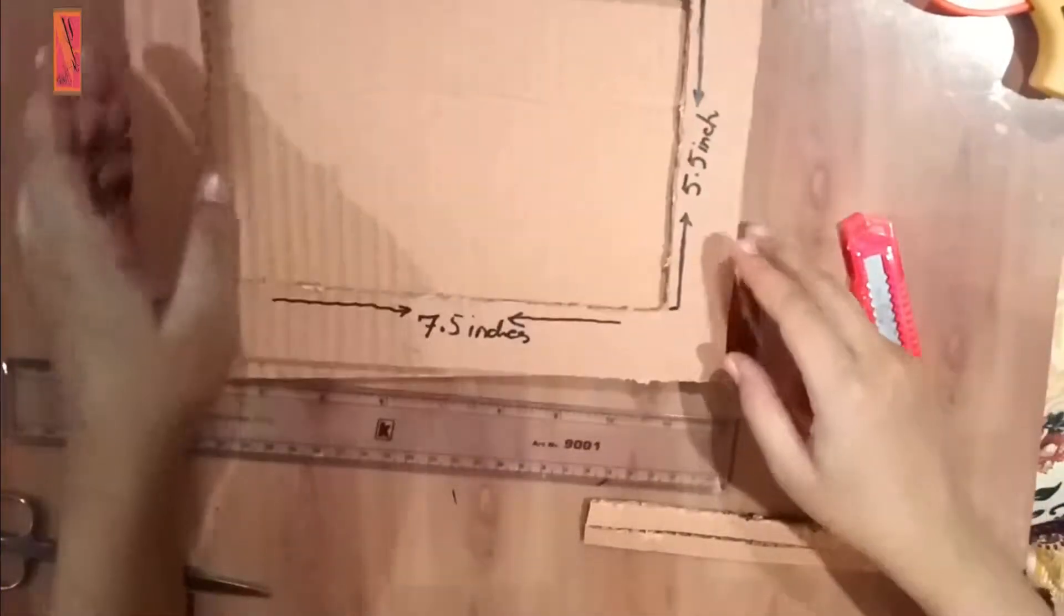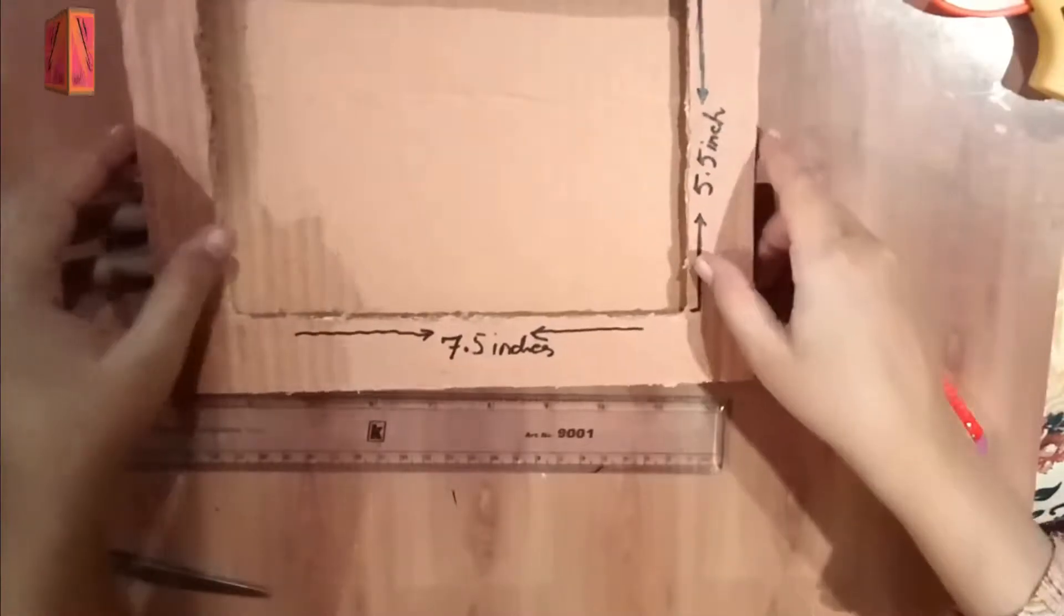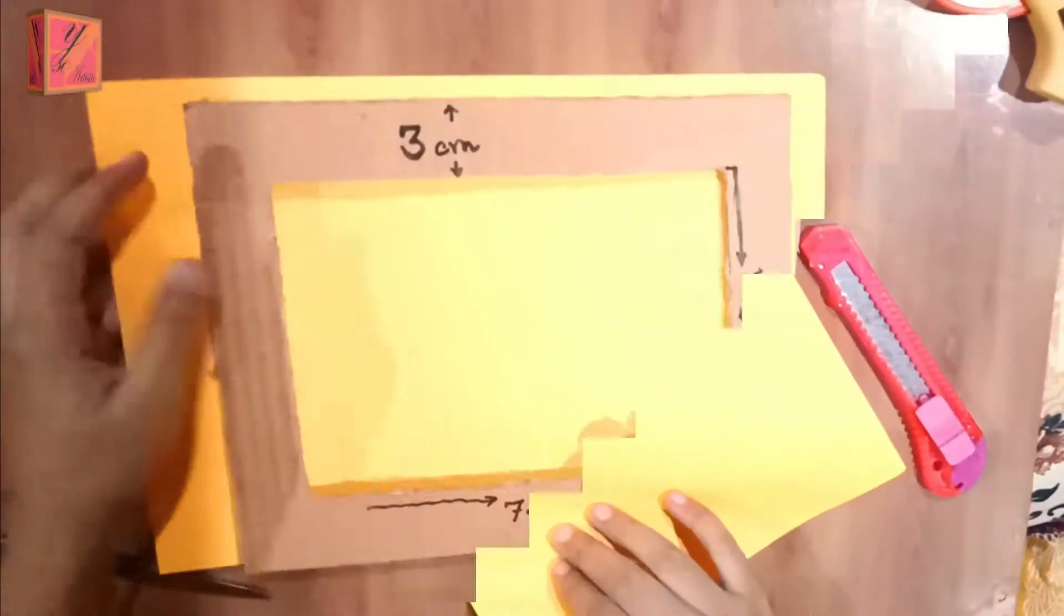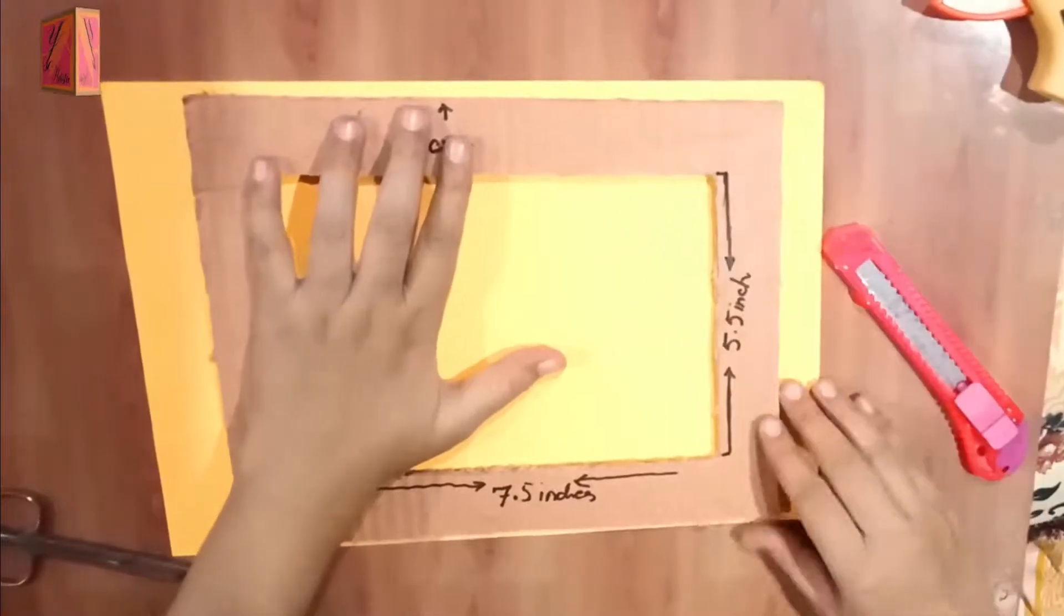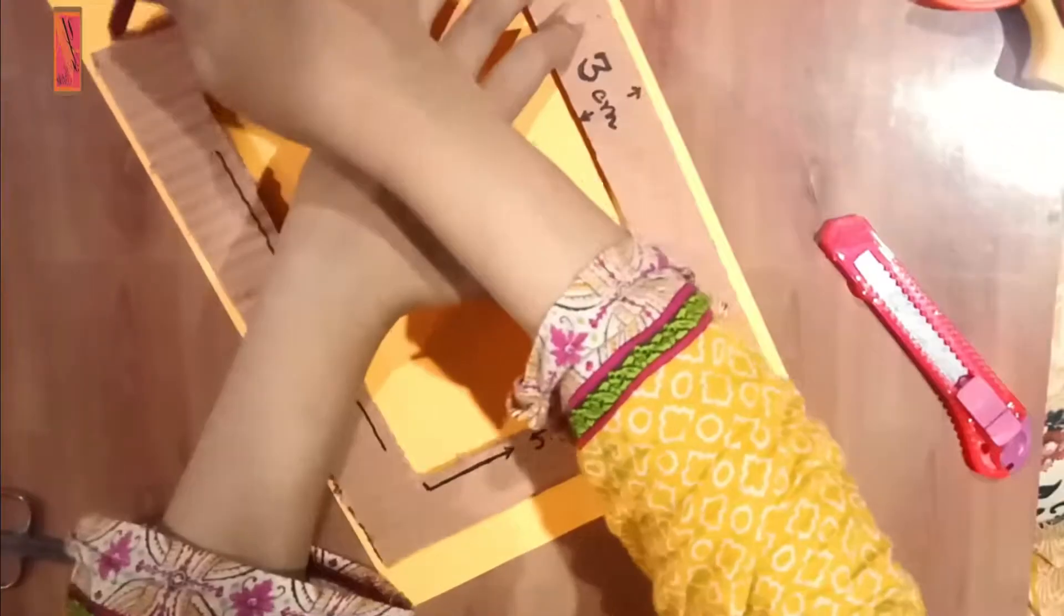We have to make 2-3 strips of cardboard. We have to cover the frame with color paper. We have to make sure that it can cover the frame.